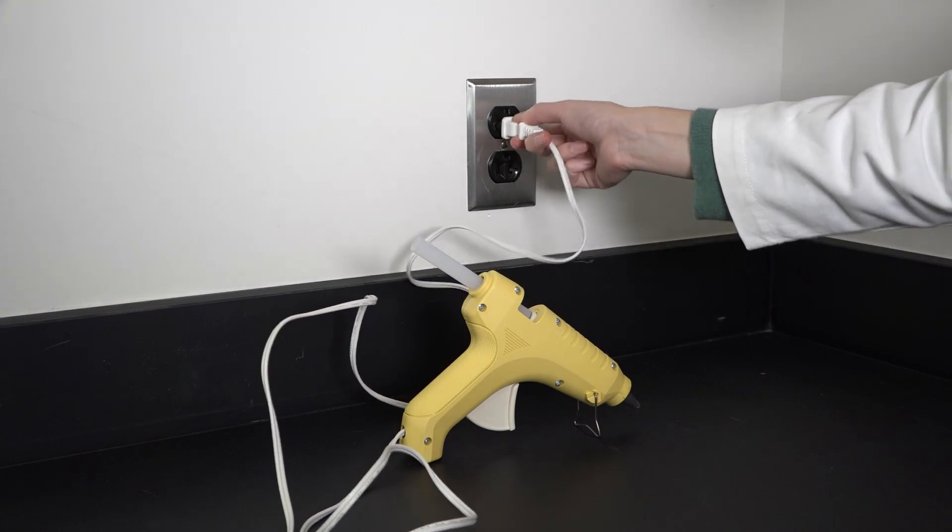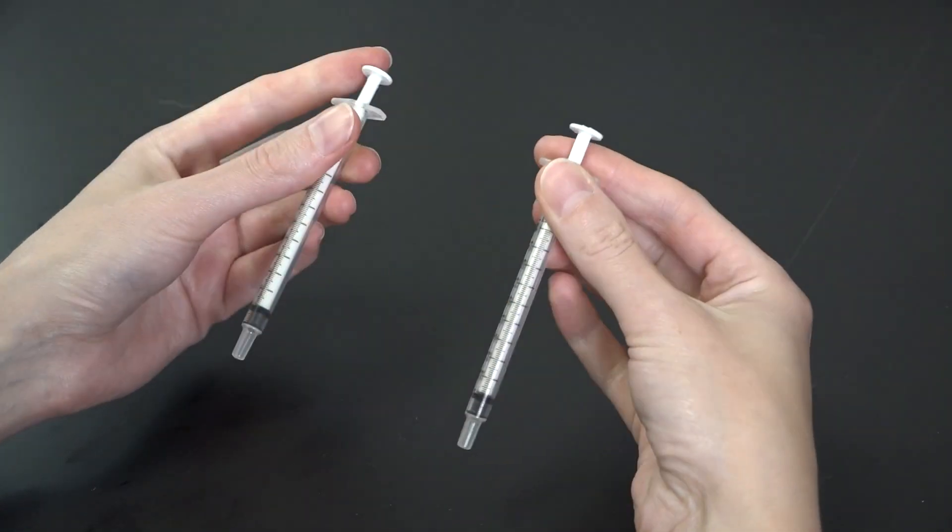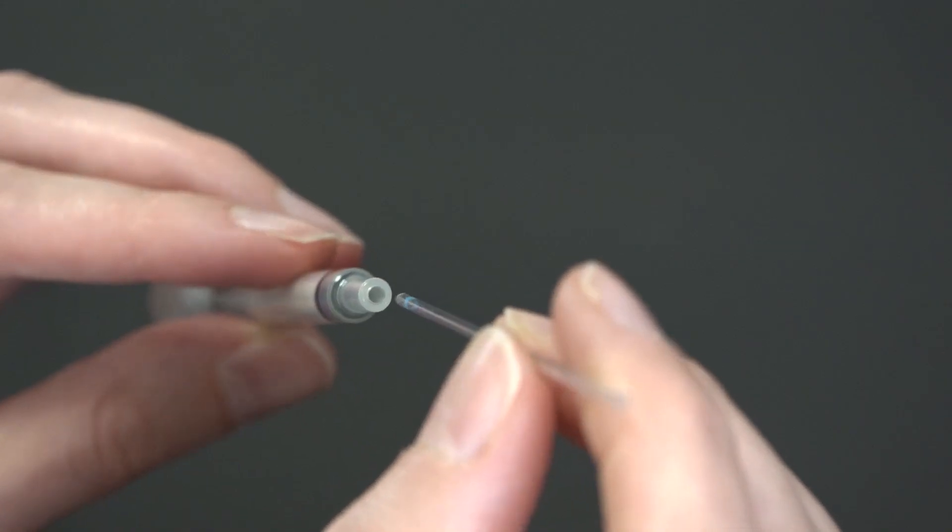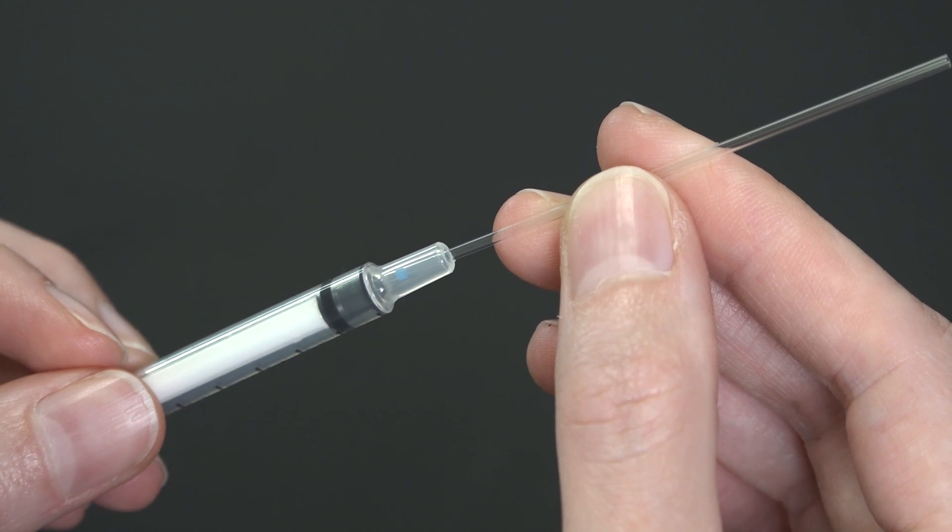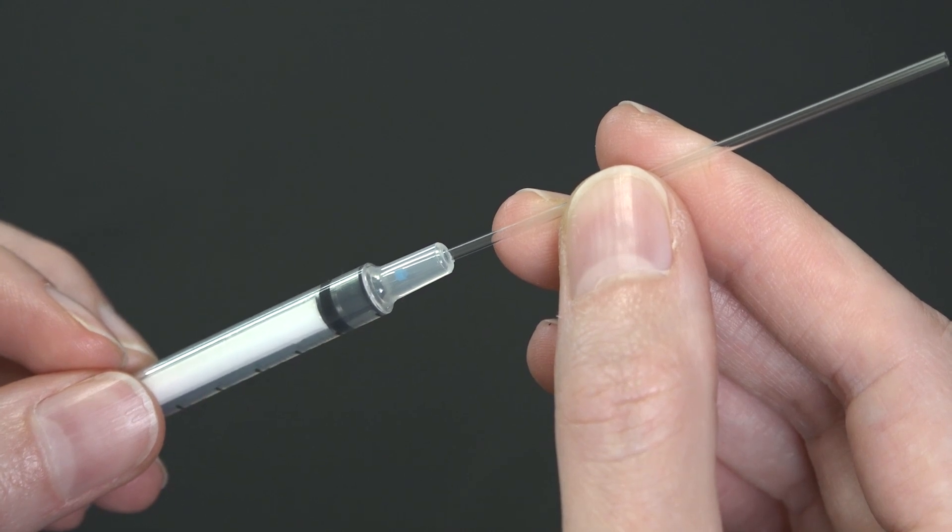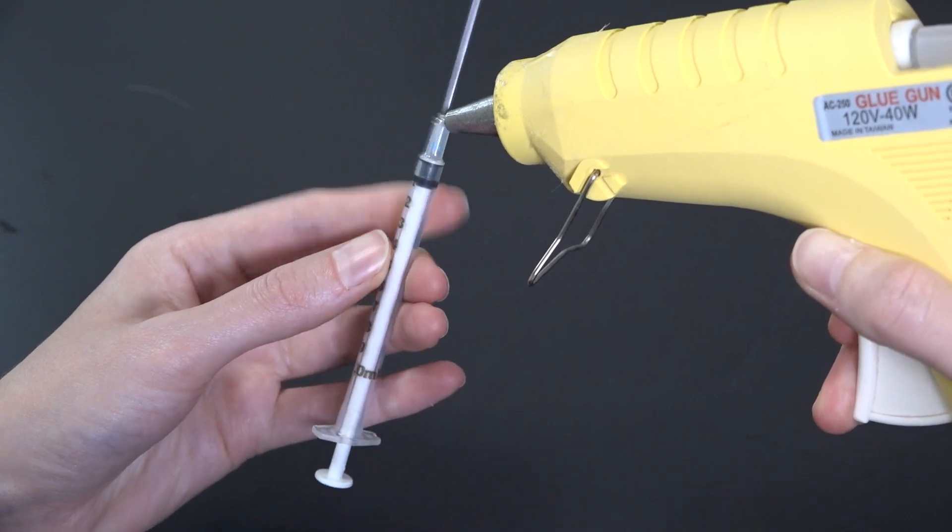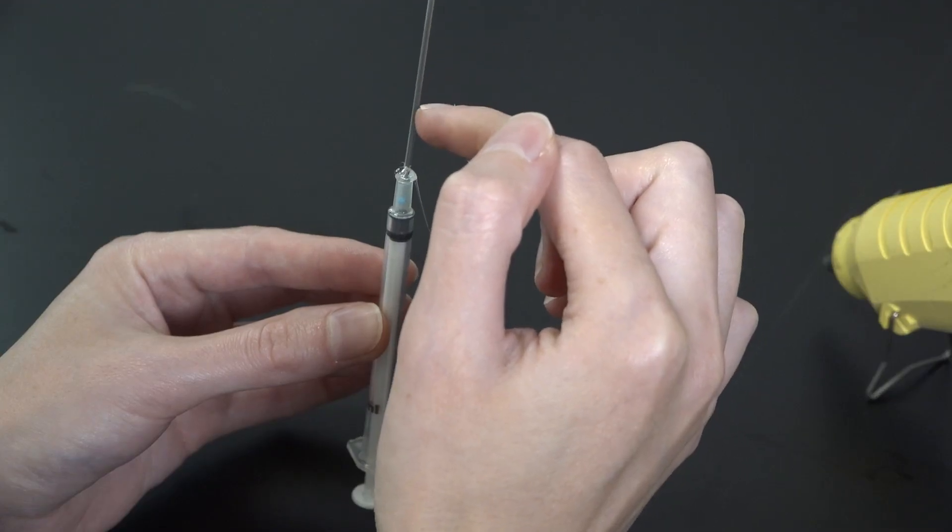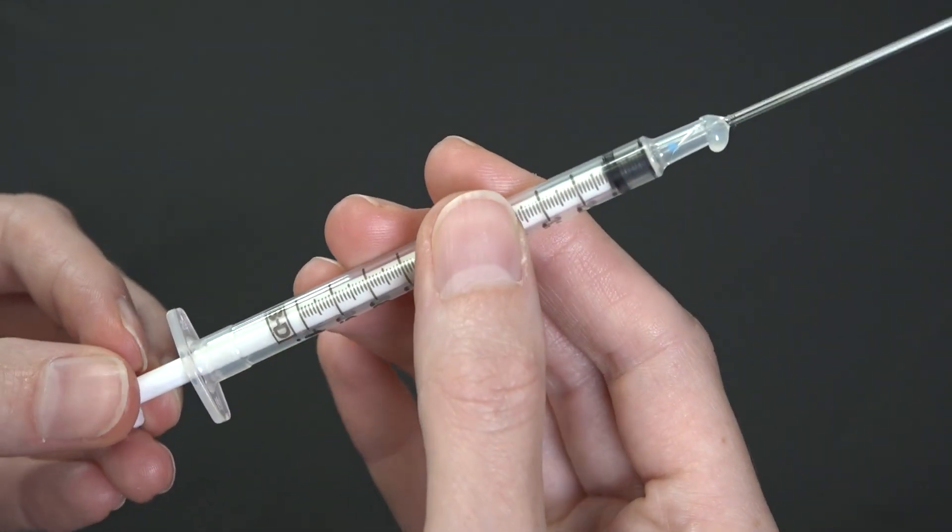First, while I warm up my glue gun, I'll make sure the plungers of my syringes are pushed all the way in. Then I'll insert a capillary tube into the syringe where the needle usually goes, making sure it slides all the way to the plunger tip. Next, I'll seal the place where the capillary tube meets the syringe with hot glue, keeping the capillary tube sticking straight up until it cools. I'll know I did it right if I can pull back on the plunger.